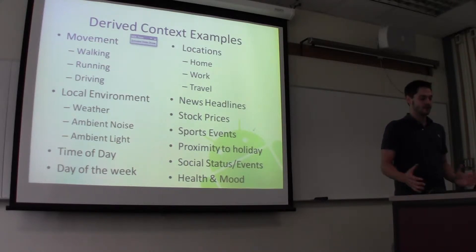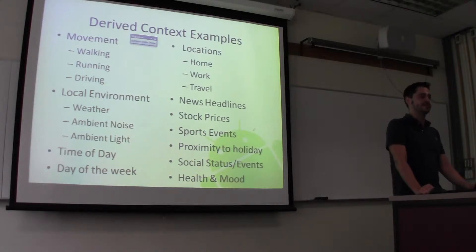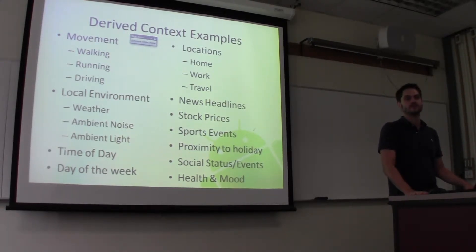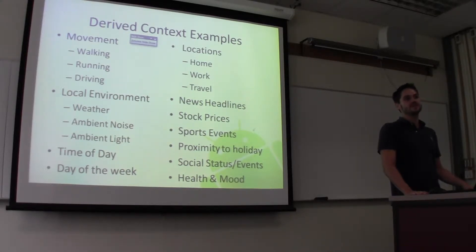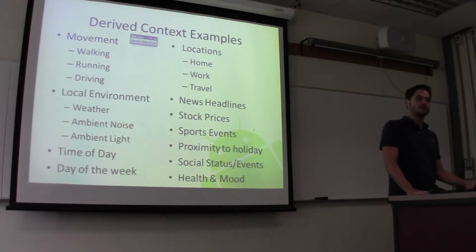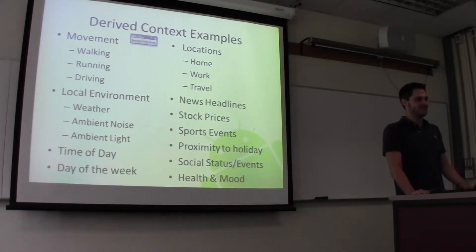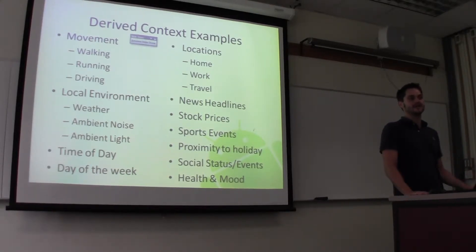Some context examples that we're working to drive to: things like movement — whether you're walking, running, or driving — because these are all going to mean different things in different contexts. Also local environments, since we're using the weather — depending on environmental conditions, you're going to do different things. Time of day, time of the week, also things like holidays. Locations — how close you are to home, how close you are to work, whether you're traveling or not. News headlines, stock prices, things that you care about. Or even moving into social events — did you break up with your girlfriend on Facebook? These are all things that we're trying to track and collectively determine.